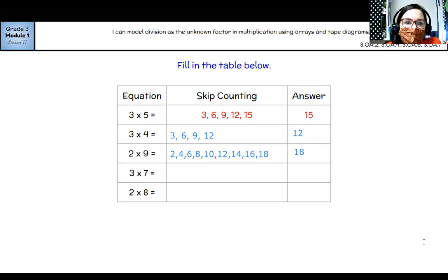Three times seven. So I've got to do three, seven times: three, six, nine, 12, 15, 18, 21. One, two, three, four, five, six, seven. Very good. And that means I landed on 21.